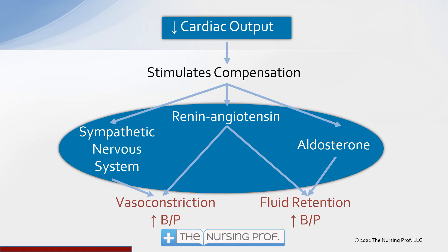As a result of this overstretching and incomplete contraction, we get decreased cardiac output. That stimulates three major compensatory mechanisms: the sympathetic nervous system — those beta adrenergic receptors innervating the myocardial cells — the renin-angiotensin system, and the aldosterone system. The sympathetic nervous system and renin-angiotensin system cause vasoconstriction and try to increase blood pressure and heart rate. On the other side, the renin-angiotensin system and aldosterone work on the kidneys, telling them to retain fluid.